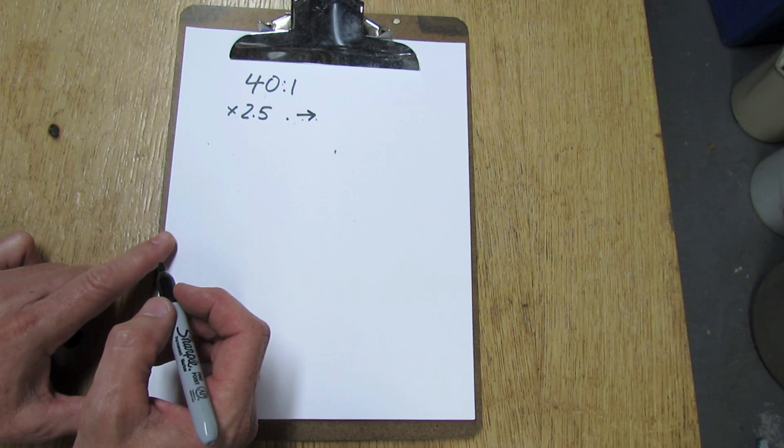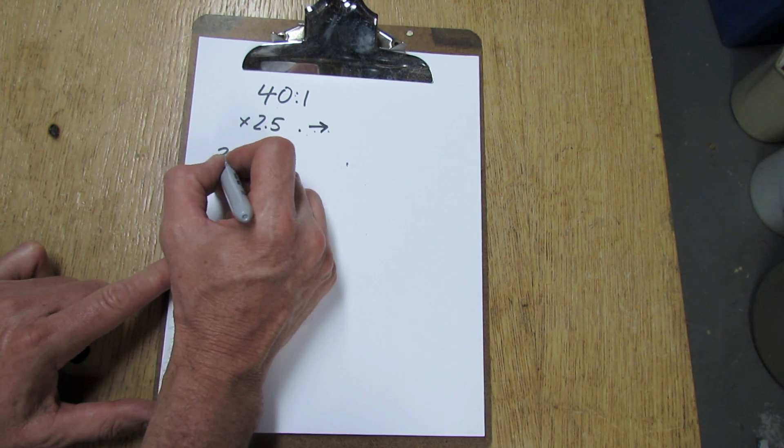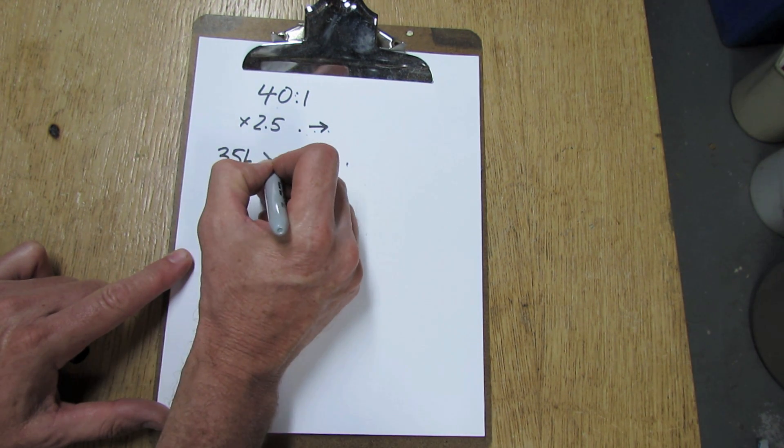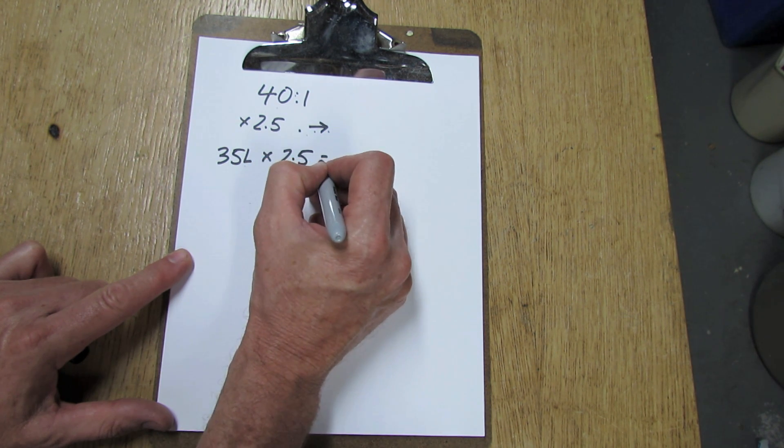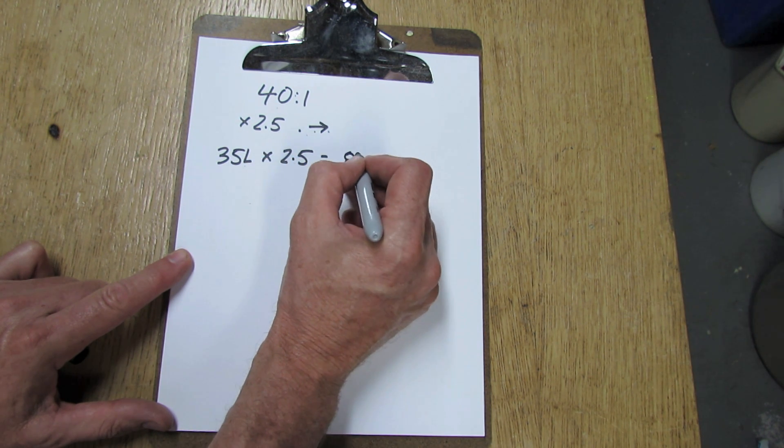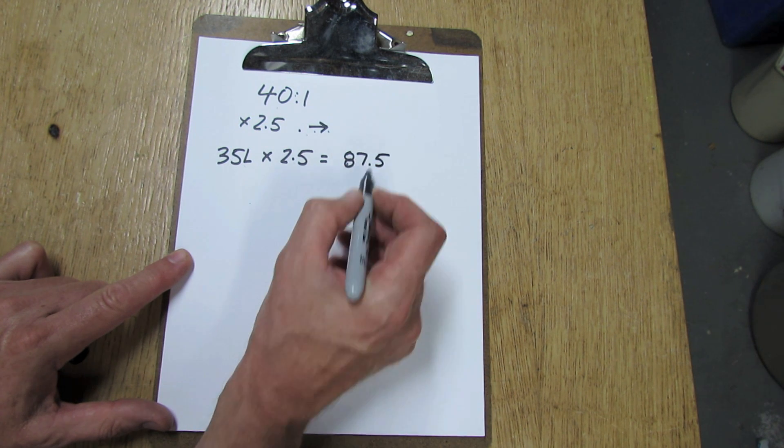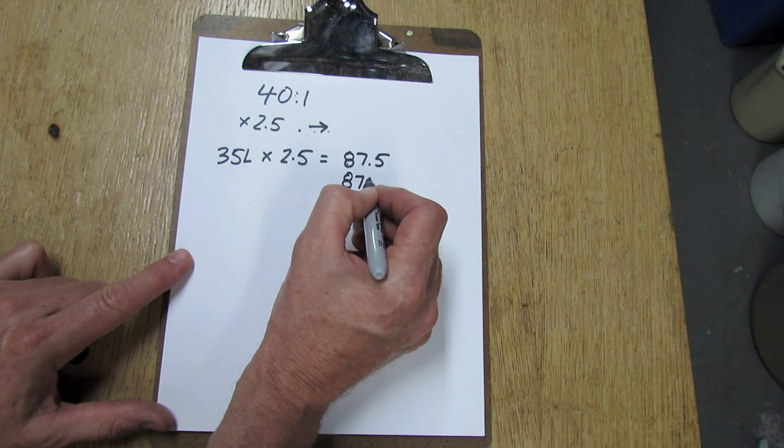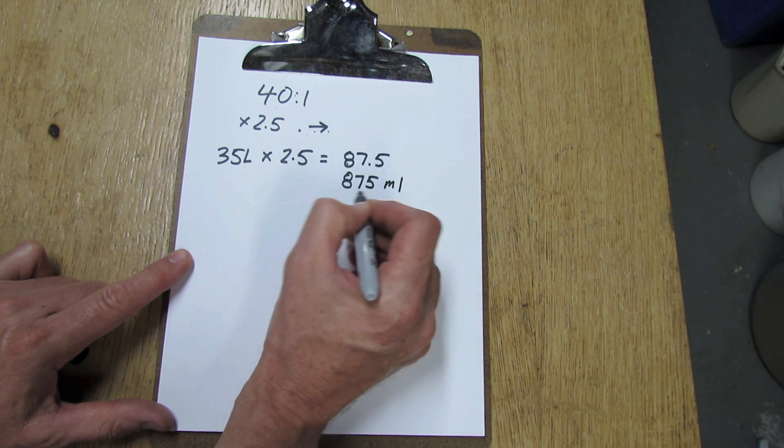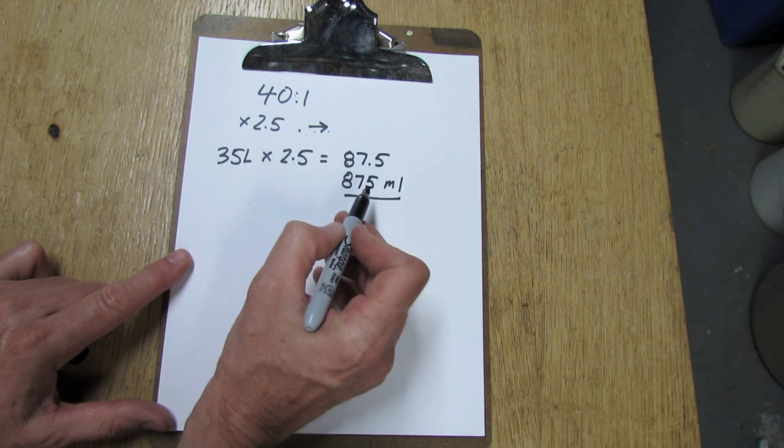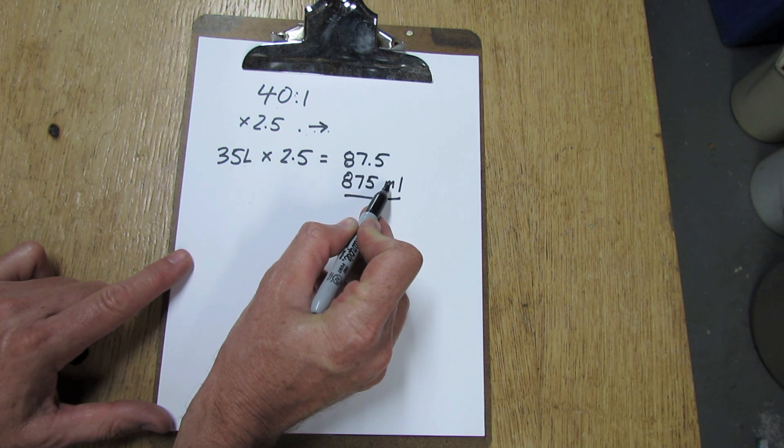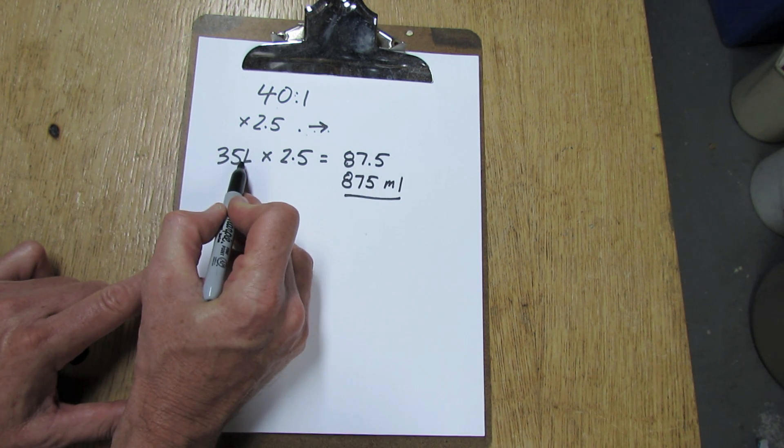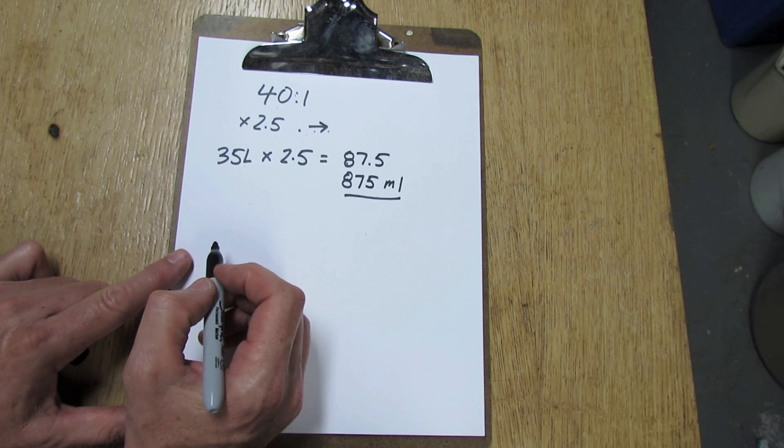Let's use 35 liters as an example. 35 liters times 2.5 equals 87.5. Then we move the decimal place over one, which gives us 875 milliliters. So you're going to add 875 milliliters to 35 liters of fuel to give you a 40 to 1 ratio.